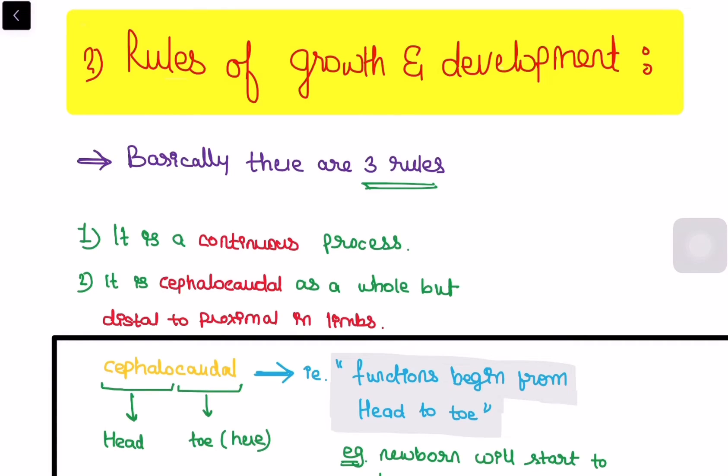The second one, it is cephalocaudal as a whole, but distal to proximal in limbs. Now what does cephalocaudal means? Yes, you heard it right, cephalo that means head and caudal that means the toe or here we can say the distal part. Function begins from head to toe. This is the perfect meaning of cephalocaudal.